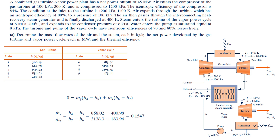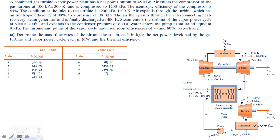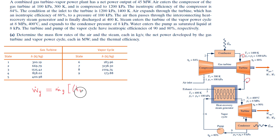We can write the expression for the net power developed across the gas turbine: W_dot_g equals m_dot_g times [(h3 minus h4) minus (h2 minus h1)], where (h3 minus h4) is the work done across the turbine between states 3 and 4, and (h2 minus h1) is the work consumed by the compressor between states 1 and 2.